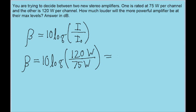If you put this into your calculator, you find that the beta value is 2.0 decibels. This means the more powerful speaker is only 2 decibels louder than the quieter speaker, which is a barely perceptible difference.